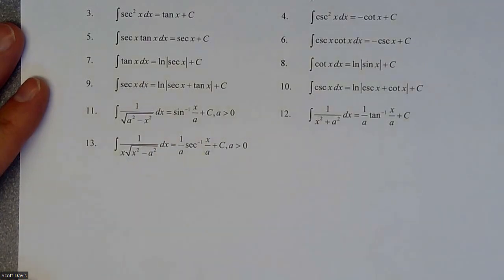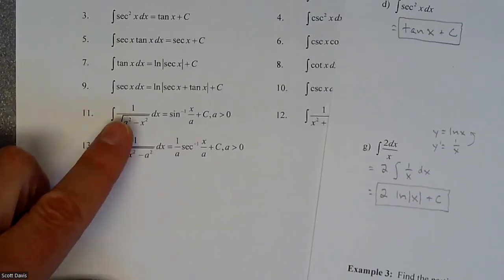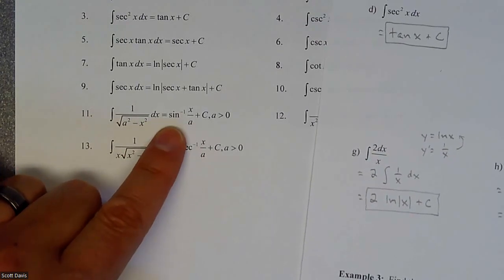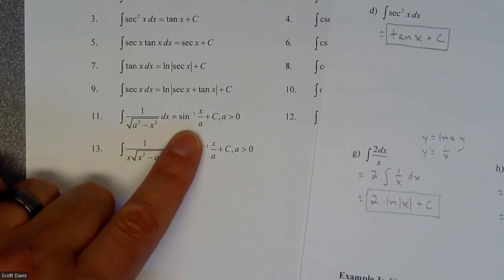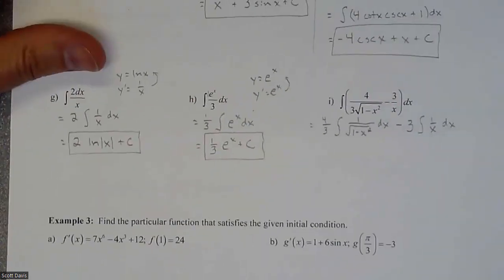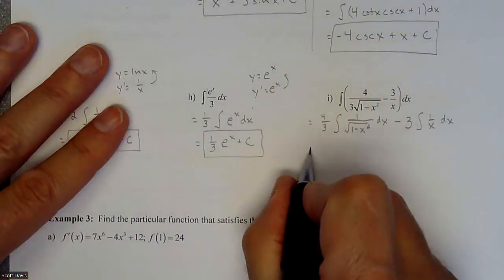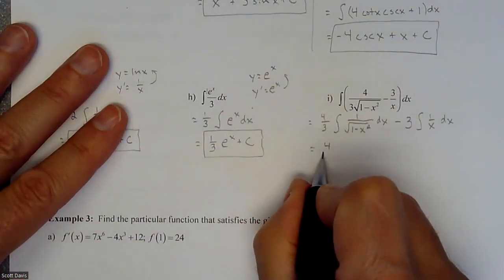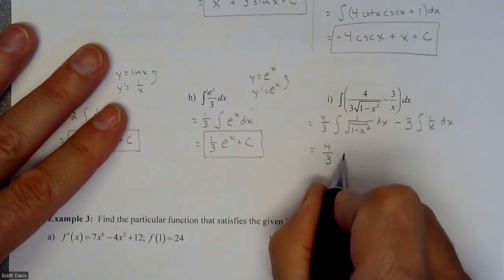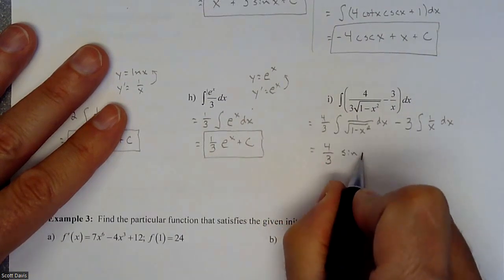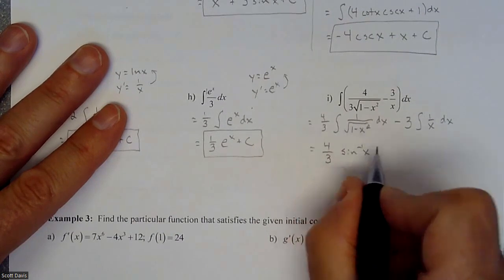So that a squared, we don't have anything special on it. That's just a one. And so when we do our antiderivative, it won't be anything special either. So it's just going to be an inverse sine x. So that's going to be four-thirds inverse sine of x.